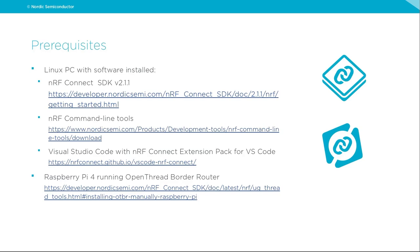There are a couple of things necessary to prepare to replicate all steps from this webinar — please see the provided links to the official documentation guides. You need NRF Connect SDK 2.1.1 installed on your Ubuntu Linux PC, NRF command line tools for programming and debugging, and Visual Studio Code with the NRF Connect extension pack. The last important part is preparation of Raspberry Pi and OpenThread border router, which was presented in the previous webinar — particularly the section starting at 16 minutes 15 seconds.